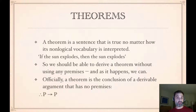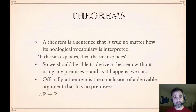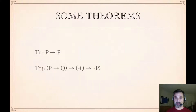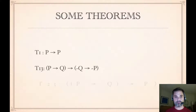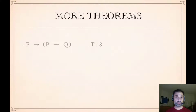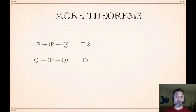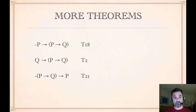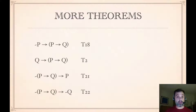For example, the sentence 'if P then P' is a theorem because the argument — therefore, if P then P — with no premises, is derivable. So theorem 1 is 'if P then P.' Theorem 13 is 'if P then Q, then if not Q then not P.' Theorem 23 says 'if P then Q, only if P, then P.' Theorem 18 tells us 'if not P, then if P then Q.' Theorem 2 tells us 'if Q, then if P then Q.' Theorem 21: 'if not (if P then Q), then P.' And theorem 22: 'if not (if P then Q), then not Q.'